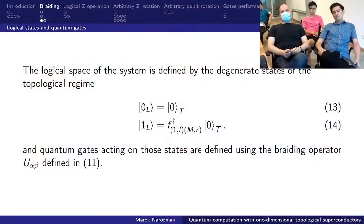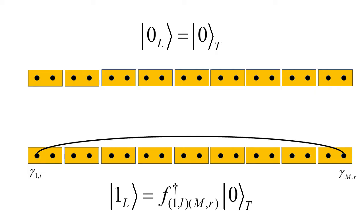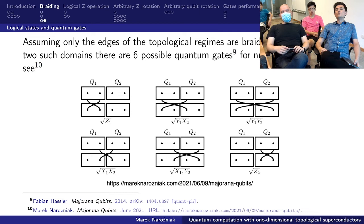So that forms our logical space. The highly delocalized quasi-fermion is what actually encodes our state. So the logical zero state is the topological regime ground state without highly delocalized quasi-fermion. And the logical one state is the topological regime ground state with the highly delocalized quasi-fermion. So if it is the edges, far edges of the chains that encode quantum information, then we should be able to process it by braiding only the edges.